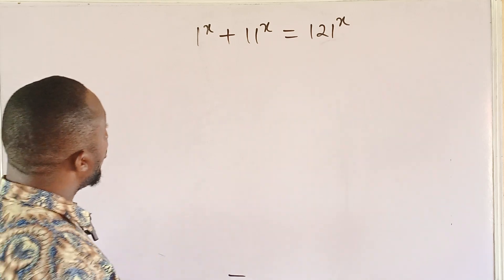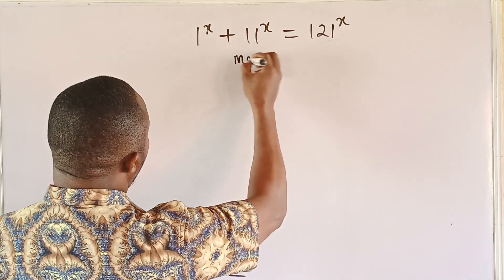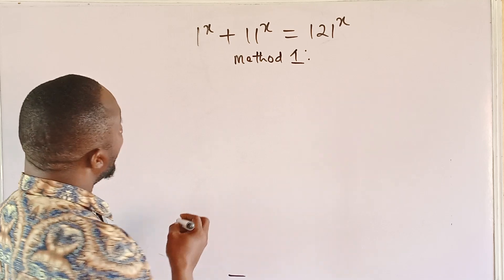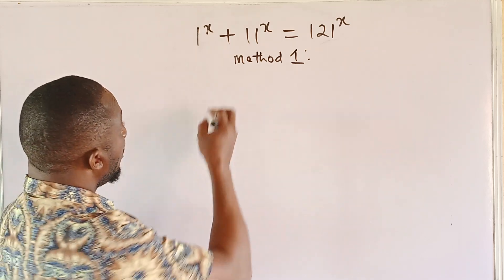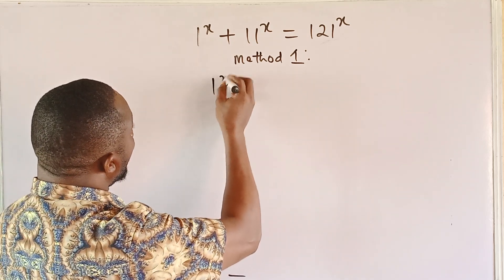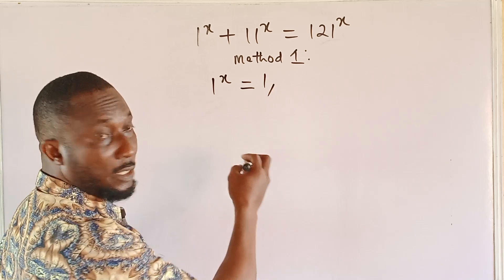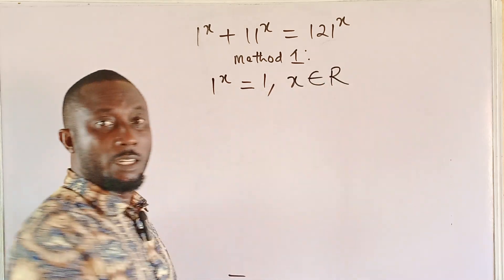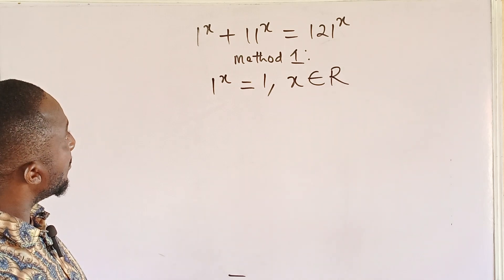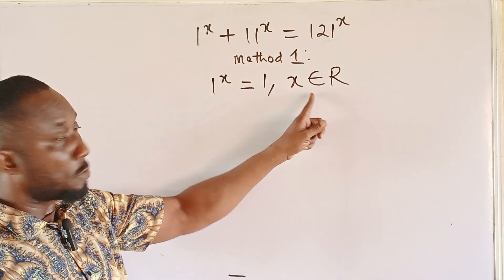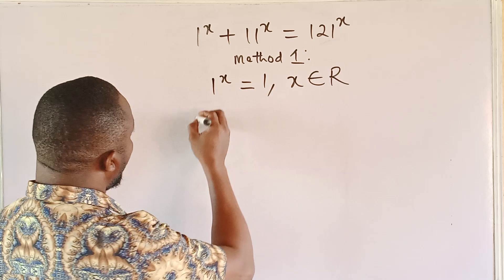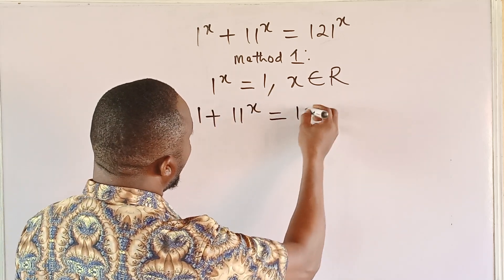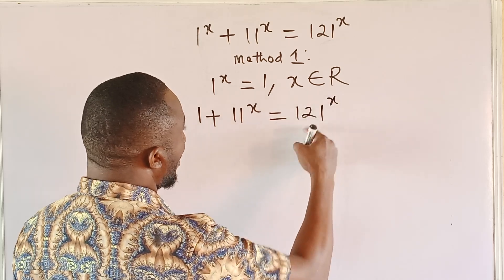Method 1. We shall be looking at the fact that 1^x is equal to 1 for all real values of x. So if this is true, we shall then have 1 plus 11^x equal to 121^x.